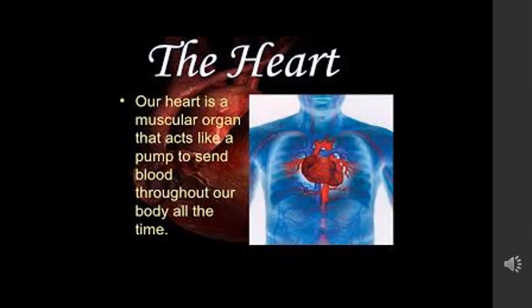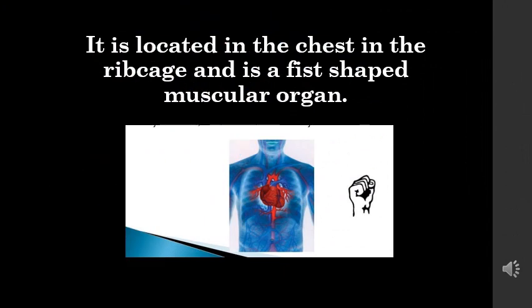Our heart is a muscular organ that acts like a pump and sends blood throughout our body. It is made of a special type of muscles called cardiac muscles, and these muscles contract and relax continuously without rest. Our heart is located in the chest cavity in the rib cage and is a fist-shaped muscular organ.